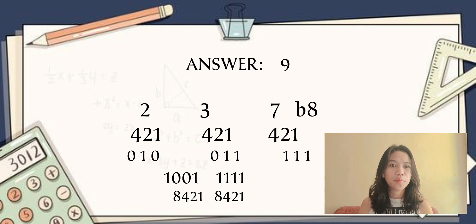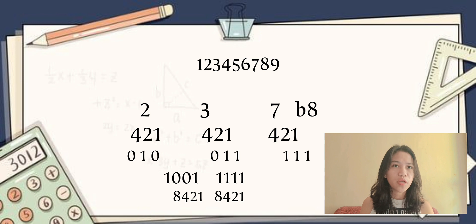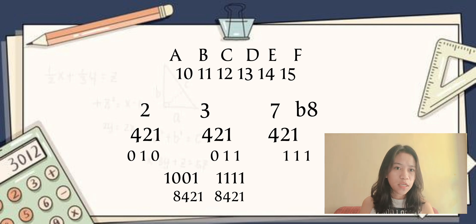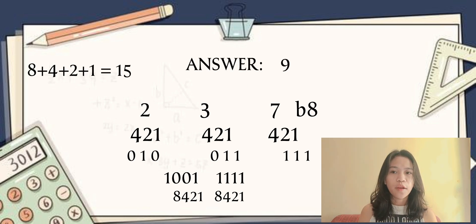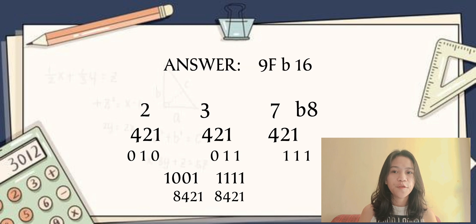In the rules of hexadecimal, we have 1 to 9 and letter A to F that signifies 10 to 15. I'll put the letter F that signifies 15, and base 16 that signifies hexadecimal.